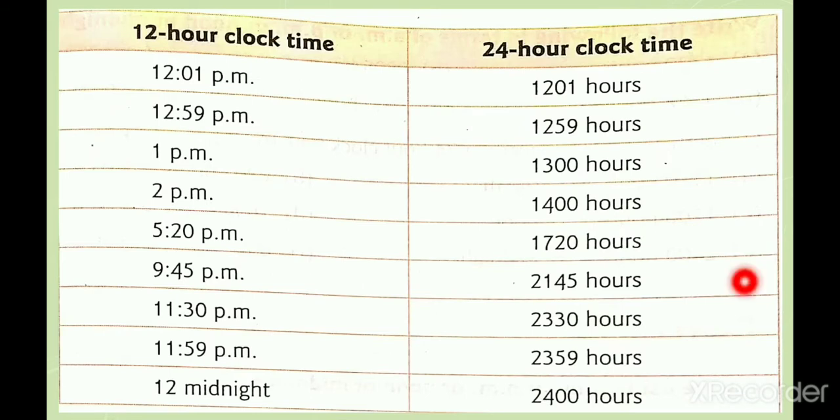Now, here the time is given from 12 afternoon to 12 midnight. If it is 12:59 PM, then it should be written in 24-hour clock as 1259 hours. If it is 1 PM, 1300 hours. If it is 2 PM, 1400 hours.